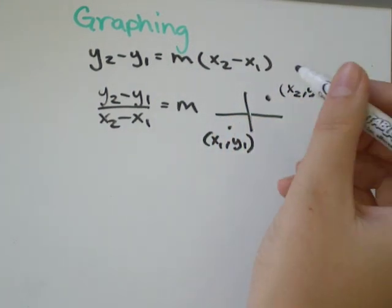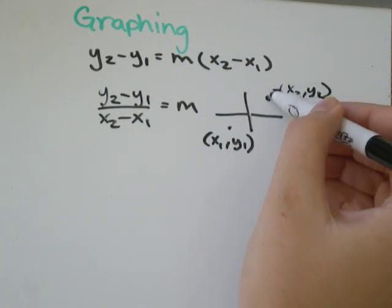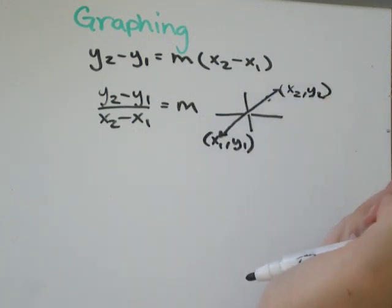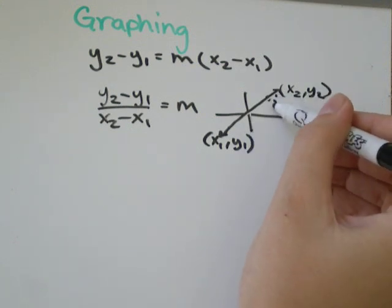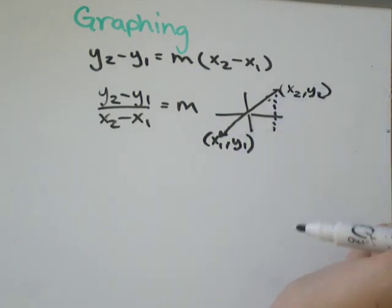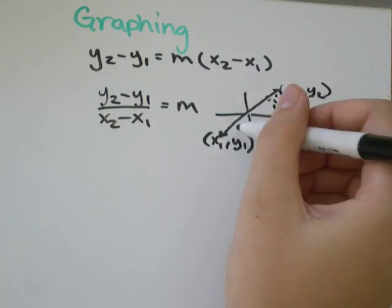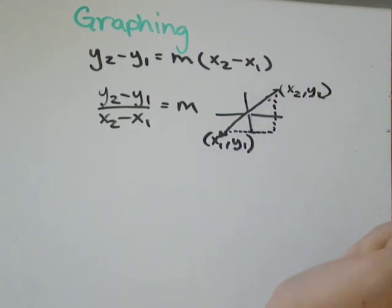So just any two points, you can figure out the slope that connects the points by finding the difference in the y value, so this difference, divided by the difference in the x value, this amount. Which kind of makes sense because another way to think of slope is rise over run.